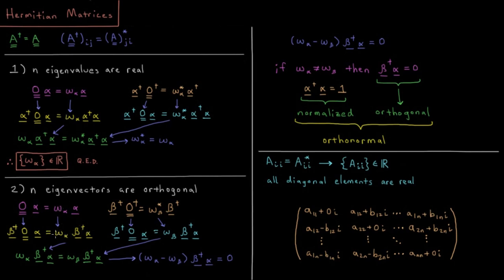Since omega is a constant we can factor it out. Then we right-multiply by alpha on the right side, giving beta dagger O alpha equals omega beta times beta dagger alpha. Once again, these two values on the left are equal to one another. We substitute omega beta here because we've already proven eigenvalues are real, so its complex conjugate equals itself. Setting the right sides equal: omega alpha times beta dagger alpha equals omega beta times beta dagger alpha.